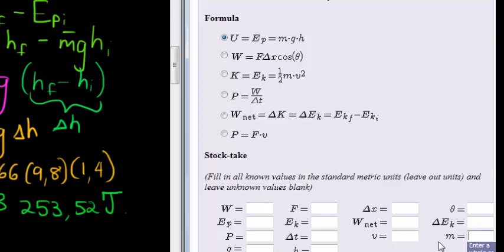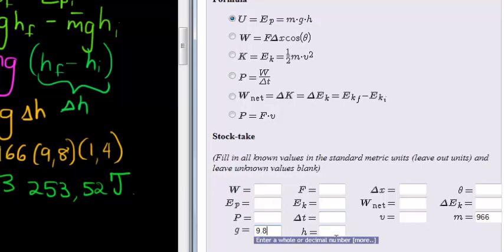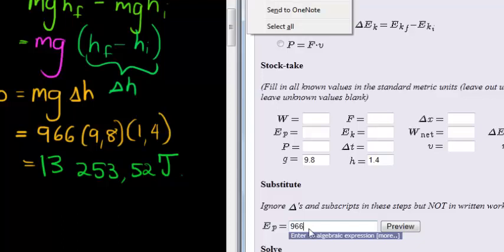We also substituted gravity, of course, 9.8. So 9.8. And the height at 1.4. And then we got that our potential energy is equal to 966 times 9.8 times 1.4.